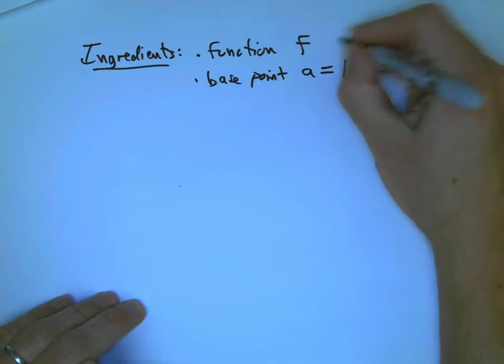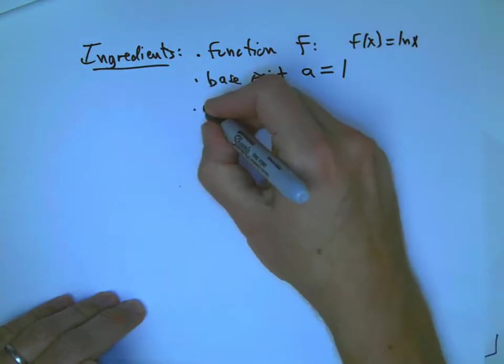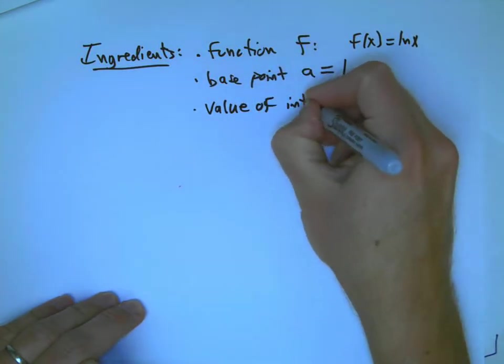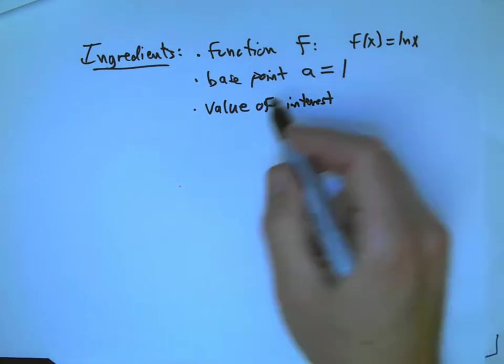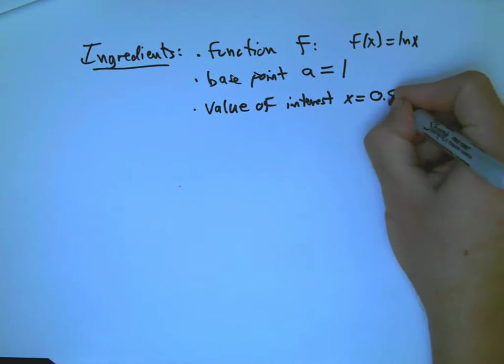And here, f of x is ln x. And our actual value of interest, so the base point, you could say that's also the simple value of x. Here's the complicated value of x. That's 0.97. Those are the ingredients.